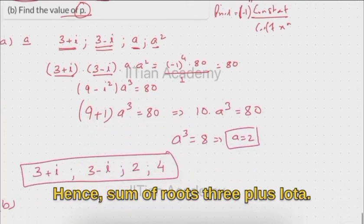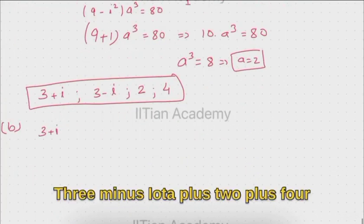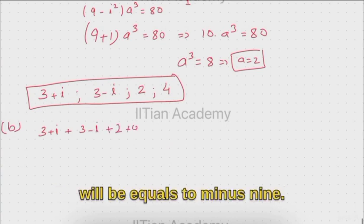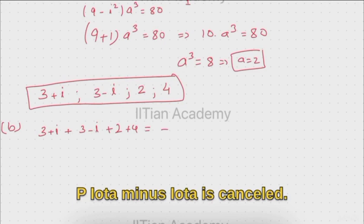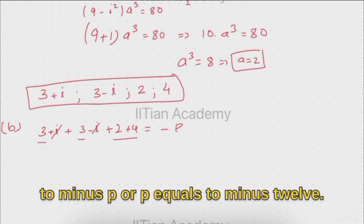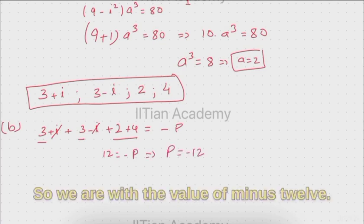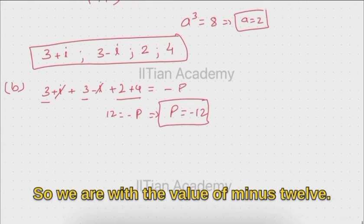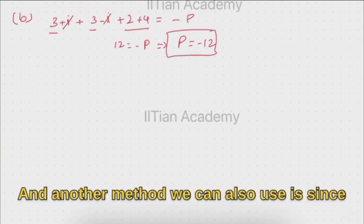The sum of roots is (3 plus iota) + (3 minus iota) + 2 + 4, which equals minus minus p. The plus iota and minus iota cancel out, giving 3 plus 3 equals 6, plus 2 equals 8, plus 4 equals 12. So minus p equals 12, giving p equals minus 12.